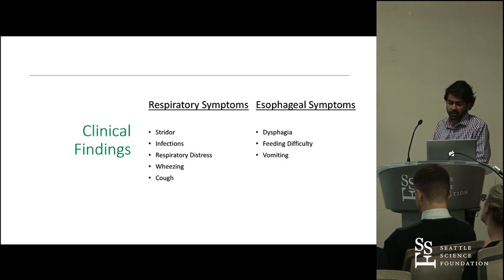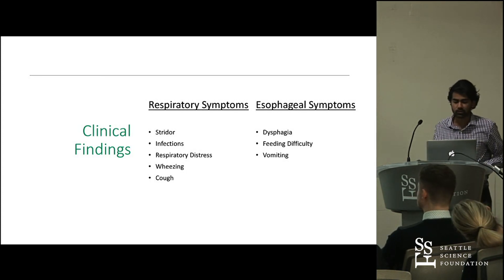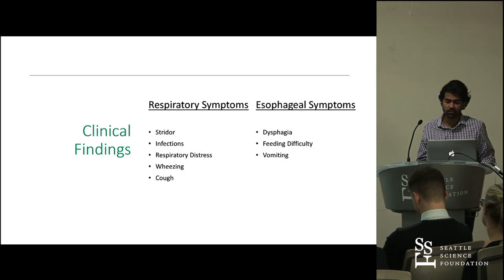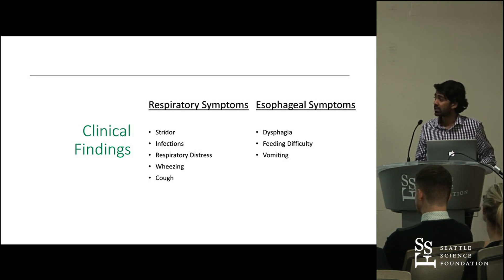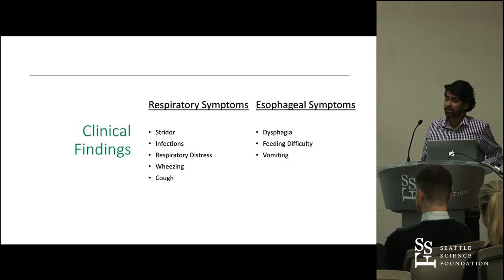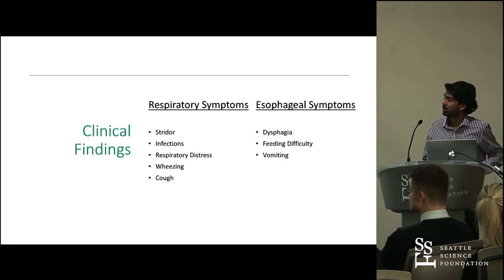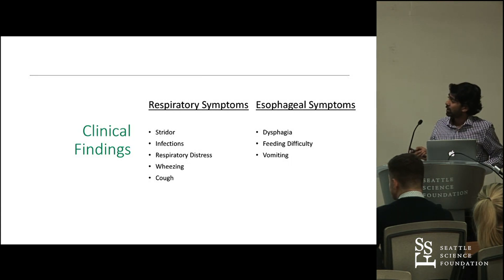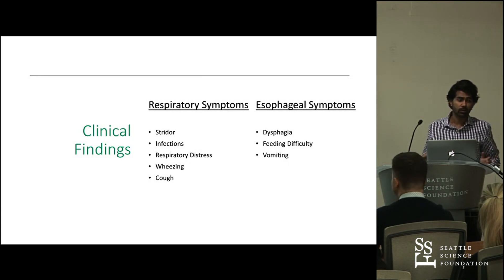Here are some of the clinical findings you'd see with double aortic arch. Respiratory symptoms include stridor, infections, respiratory distress, wheezing, and cough. On the esophageal side, you'd see dysphagia, feeding difficulty, and vomiting. Usually these symptoms present in younger patients, since the congenital malformation is present at birth and symptoms are more common in the early stages of life. However, you can also have a wide range of presentations, including no symptoms at all.